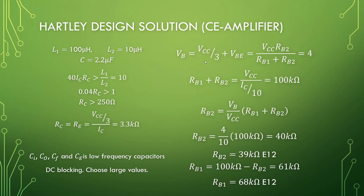And then the bias is 4 volts at the base. 100 kilohms for the two resistors, and you will find that RB2 is 39 kilohms and RB1 is 68 kilohms. So let's jump over to simulations and test these values.